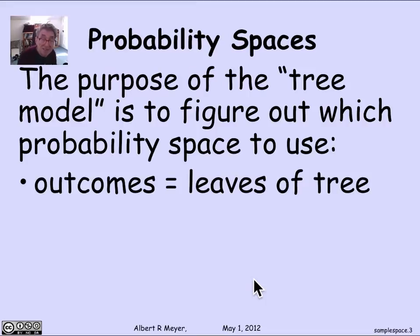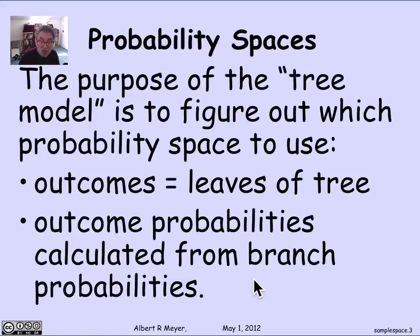When we're using the tree model, the leaves of the tree correspond to the outcomes. The outcome probabilities, which are crucial for having a probability space, we got by reasoning about the probabilities to assign to each possible branch of the tree as you work your way from root to leaf.